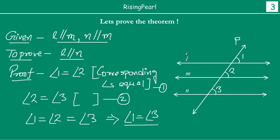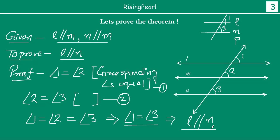Now if you take line L and line N — if you think that line M does not exist — then basically what you will see is you have line L, line N, and a transversal that cuts these two lines such that angle 1 and angle 3 are corresponding angles, and these angles are equal. From our corresponding angles axiom, if two lines have a transversal cutting them such that corresponding angles are equal, that means lines L and N are parallel. This implies line L is parallel to line N. This is what we wanted to prove.